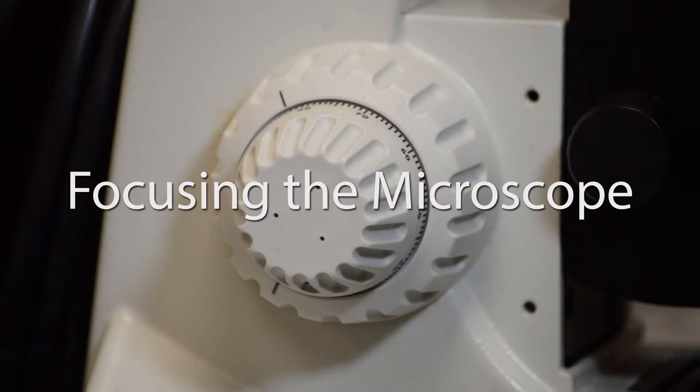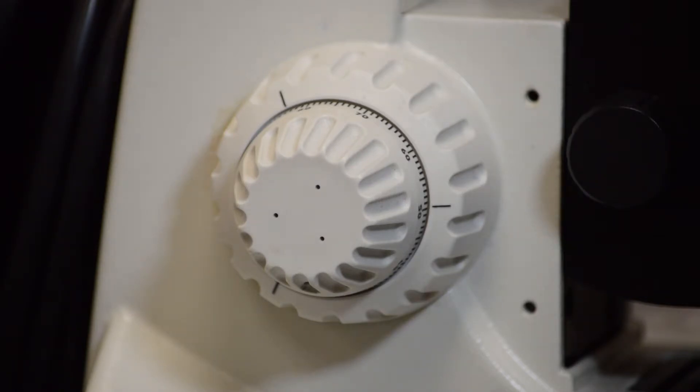The next set of controls we look at are on the side of the base of the microscope on the support, and these are the coarse and fine focusing adjustments. What these do is these move the stage closer and farther away from the objective.